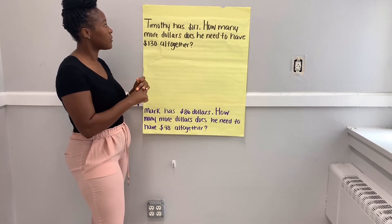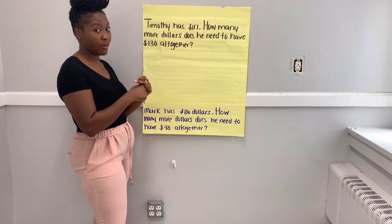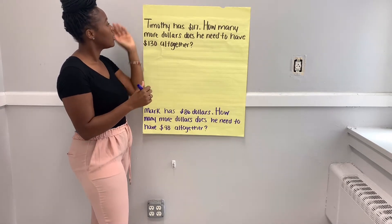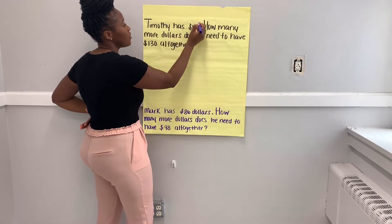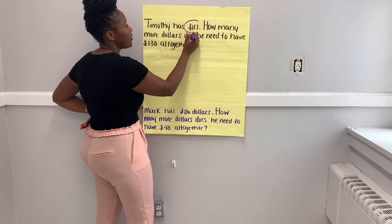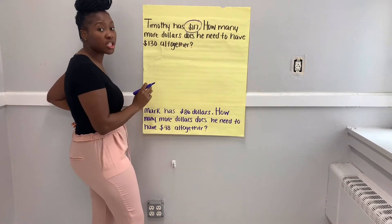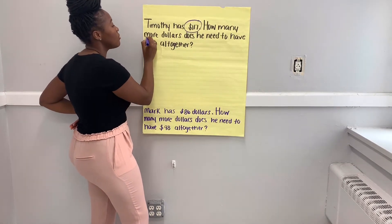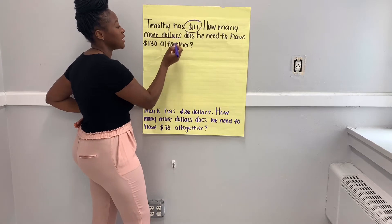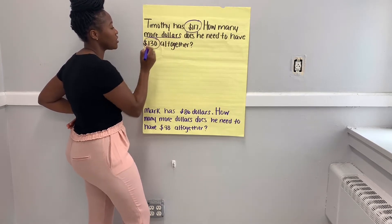So let's mark up the text together — our story problem together. We know that Timothy has $117 and he wants more money to get $130 altogether.